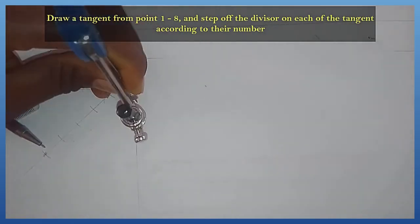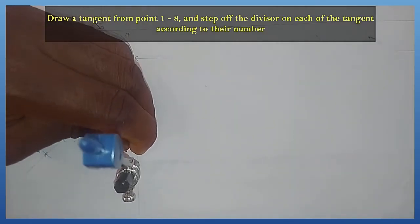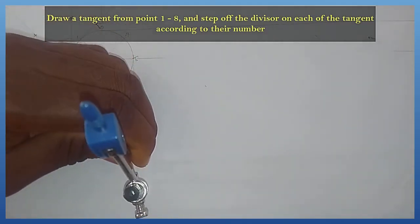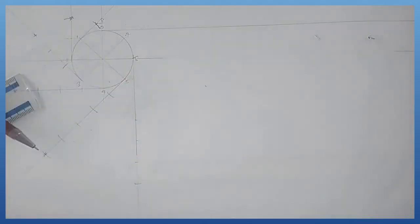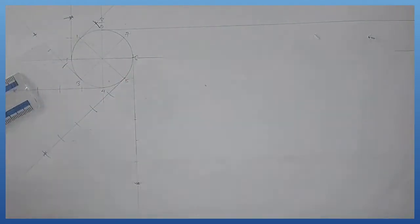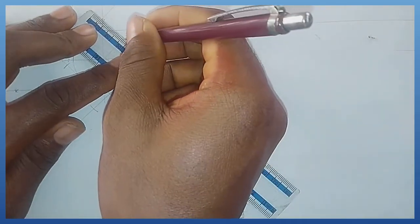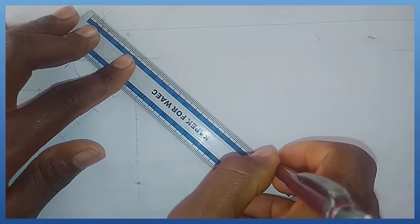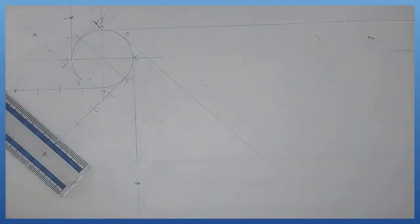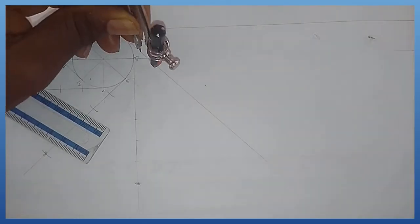1, 2, 3, 4, 5, 6. So this is the endpoint there. For point 7, this is the tangent for point 7. Then I'm stepping it off 7 times with the divisor: 1, 2, 3, 4, 5, 6, 7.